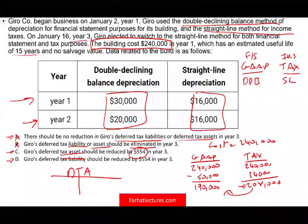Once you know there should be a reduction and a reversal — whether you have an asset or a liability — A and B are not possible. You're down to C and D. Once you know they took more depreciation for GAAP than for tax, it means in the future we'll have more tax deduction, so we have a deferred tax asset. C is the answer. But let's keep going to show how we get to the $554.